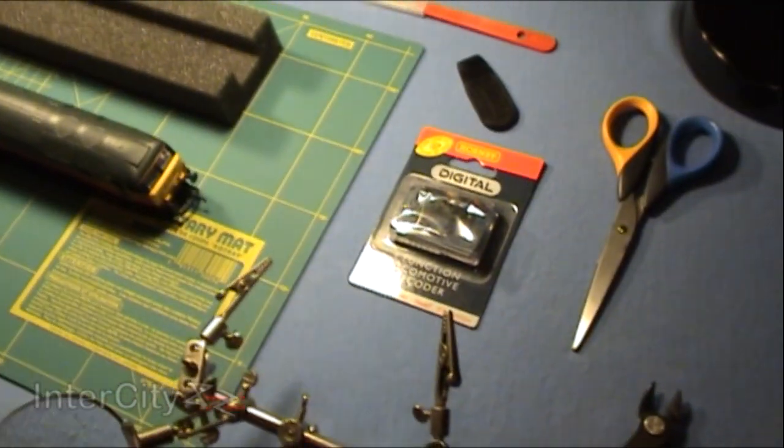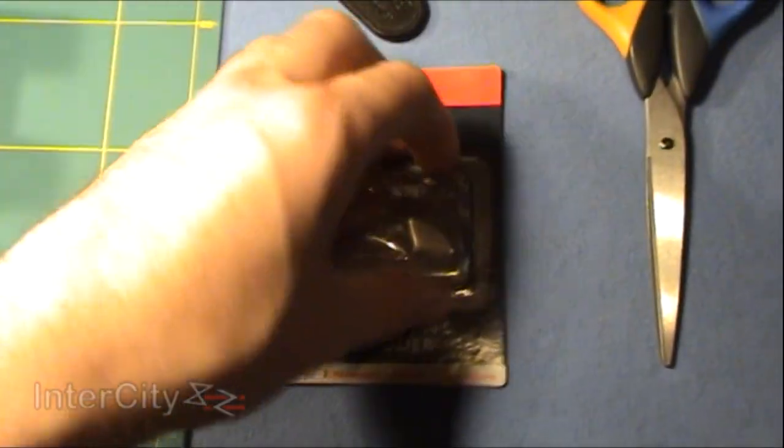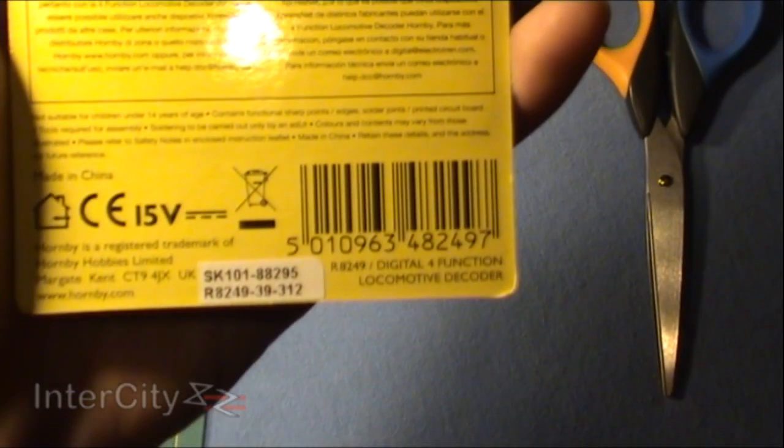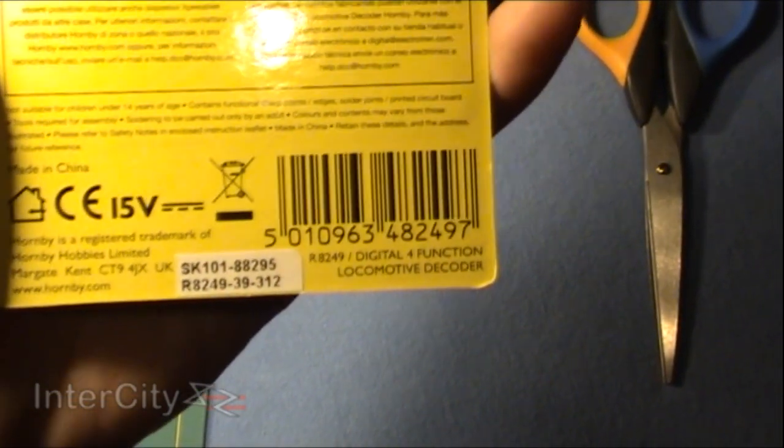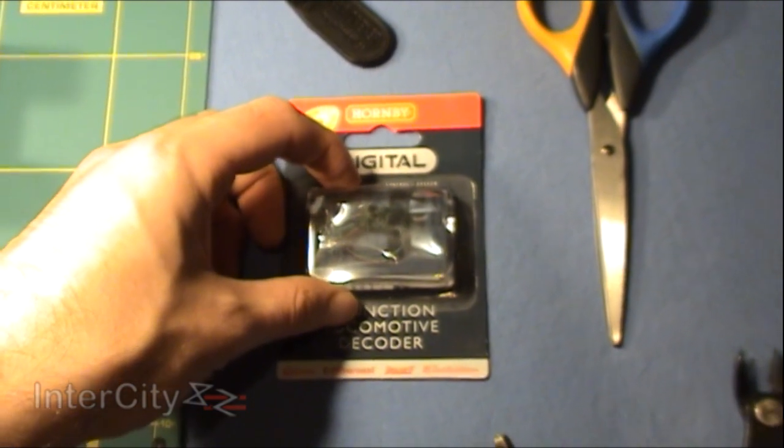Then of course we've got the actual chip. This is a very basic DCC chip, about 10, 11, 12 quid. It's the Hornby R8249, and it's a cracking little chip to be honest. There's no need to go for anything too fancy.